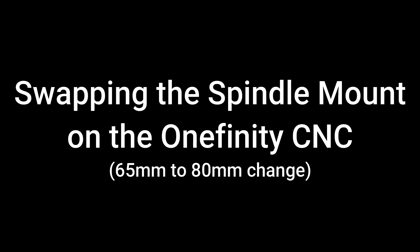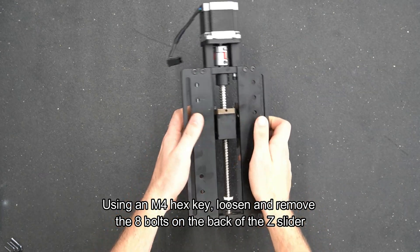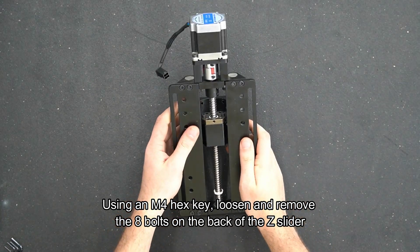Swapping the spindle mount on the Onefinity CNC. Using an M4 hex key, loosen and remove the eight bolts on the back of the Z slider.